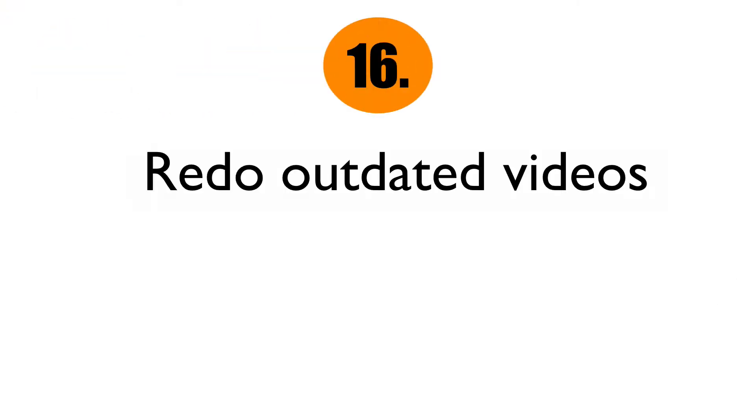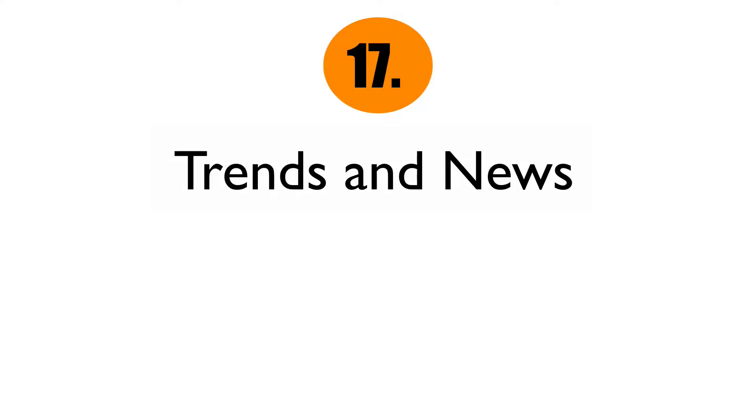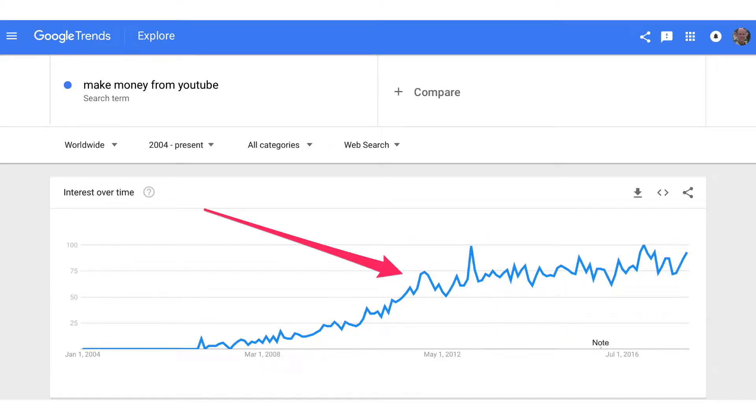Number sixteen: redo outdated videos. If you've grown your channel for a while, you might have several videos that are outdated. Why not create an updated video and then link from the old video to the new video? Number seventeen: trends and news. Create a video on breaking news, new features, or what's trending in your niche. Use Google Trends or YouTube Trends to find out what's trending on a specific topic.